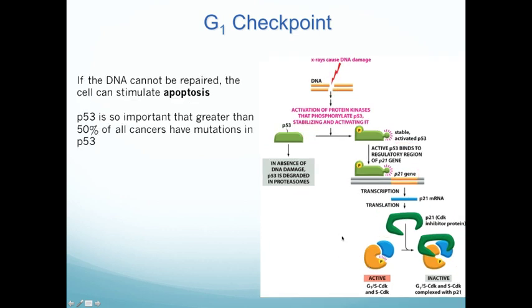If the cell finds it can't repair the DNA, it will stimulate apoptosis. p53 is also critically important because replicating damaged DNA is one of the easiest ways to create a cancer cell. In fact, over 50% of all cancers have mutations in p53. If you lose p53 function, you can no longer check for DNA damage, you can't inhibit the cyclin-dependent kinase, and the cell will always go into S phase even in the presence of damaged DNA — which is not what you want.